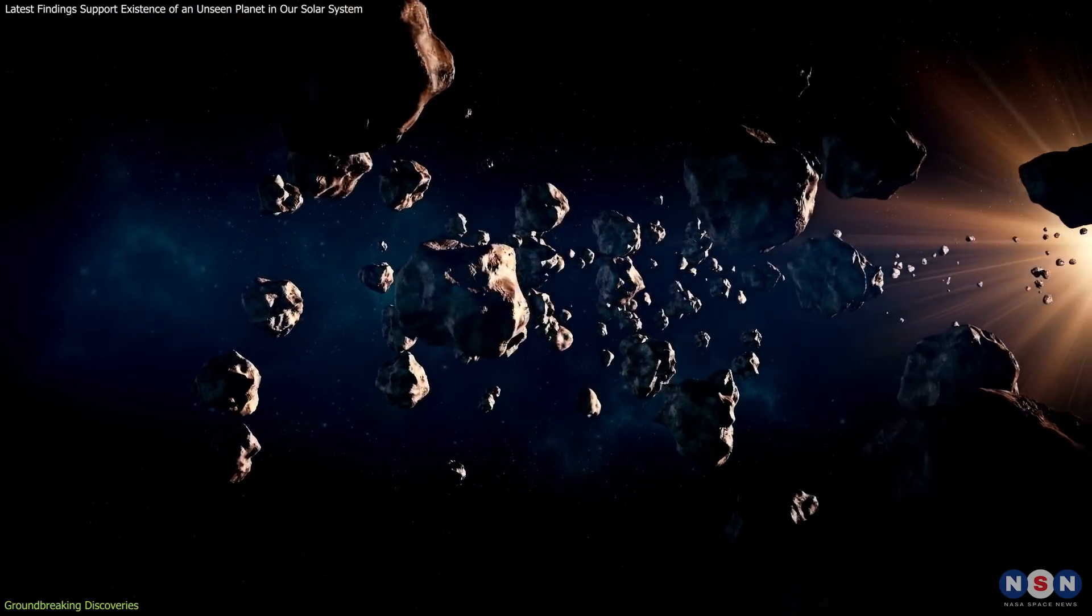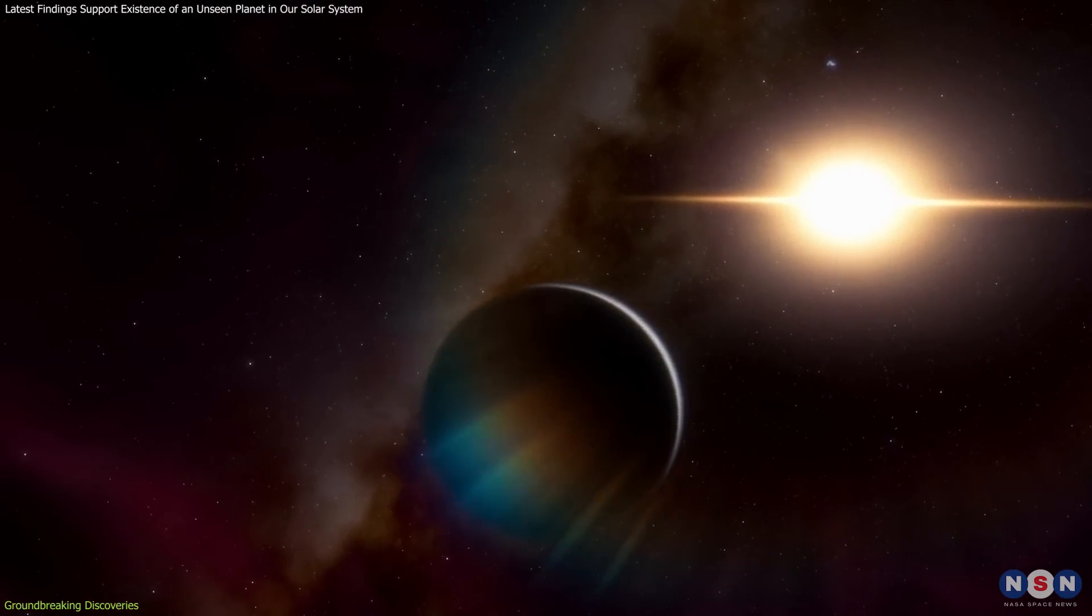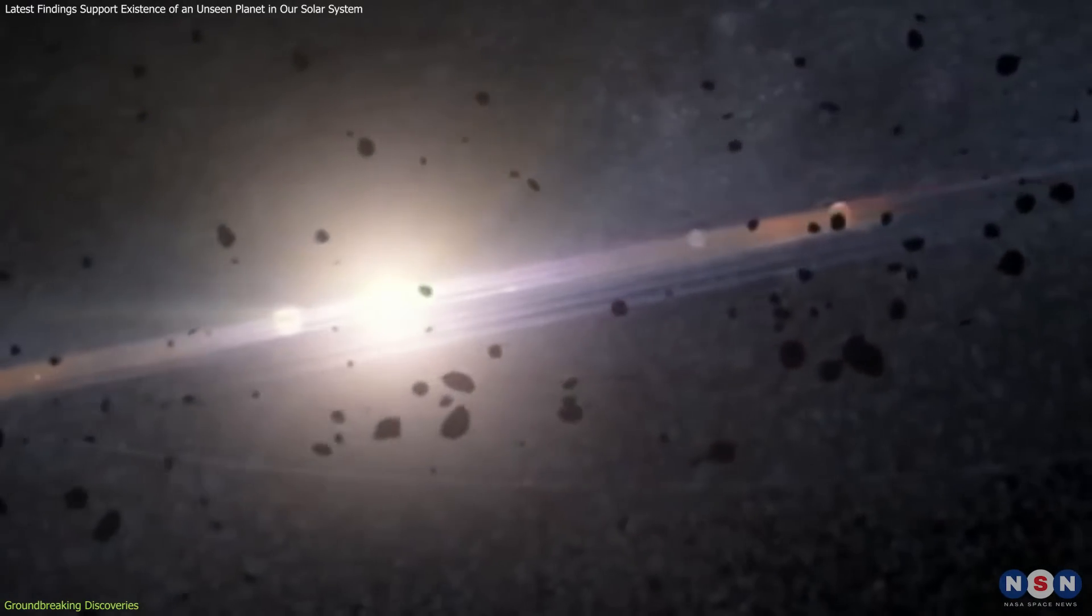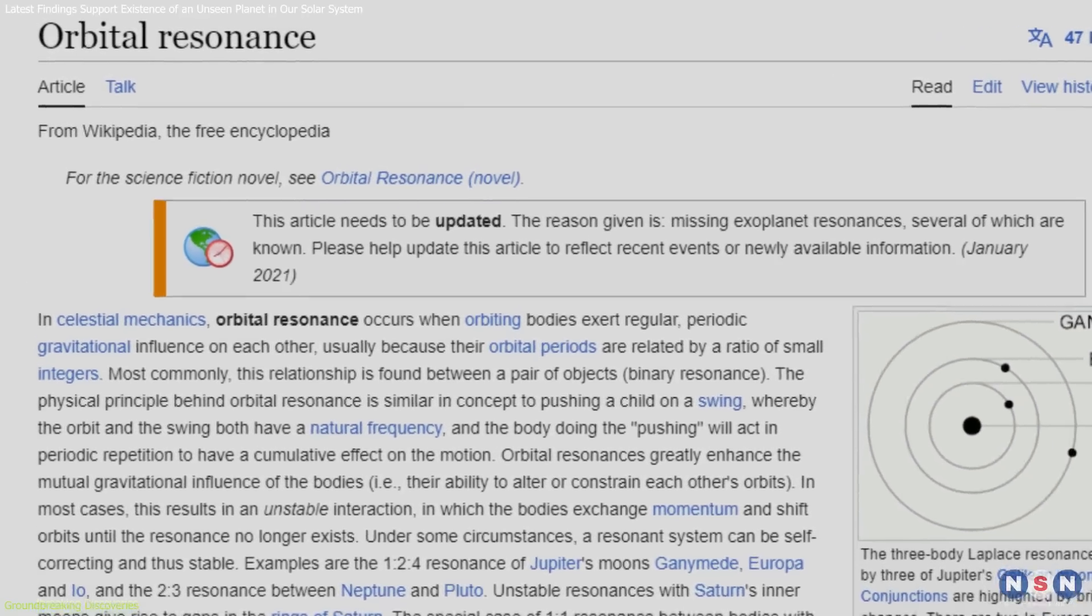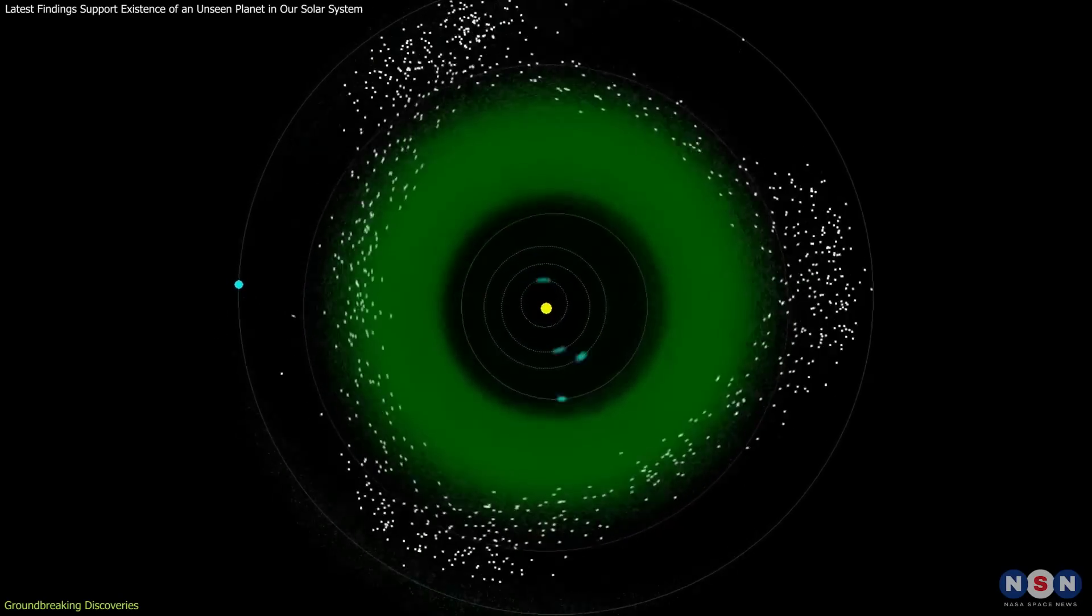For instance, simulations predict that Planet 9 could maintain its orbit over the age of the solar system, while herding TNOs into clustered orbits through a process known as mean motion resonances, where the gravitational pull of the planet and the TNOs synchronize over time.